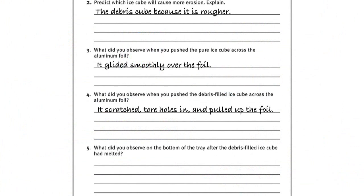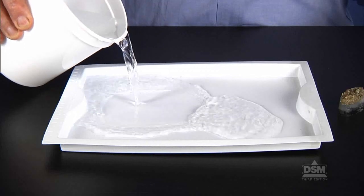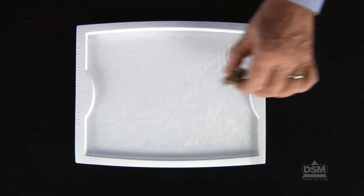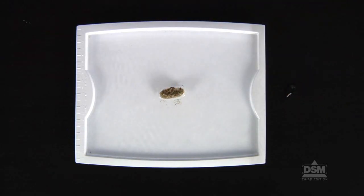To conclude session one, after students have finished experimenting and recording their observations, put about two centimeters of water in each team's tray. Instruct students to place their debris-filled ice cubes in the tray and set the tray on a windowsill. Explain that they are about to find out what happens when a glacier meets a body of water.